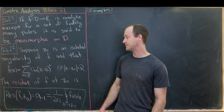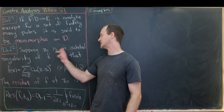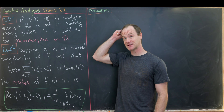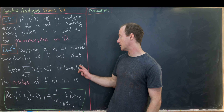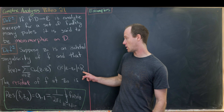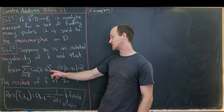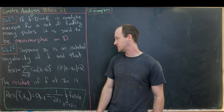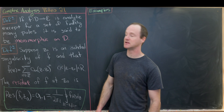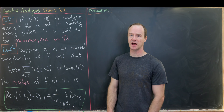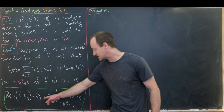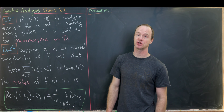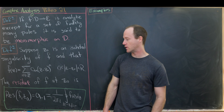The big definition for today is the following. Suppose that z₀ is an isolated singularity of f, and that f(z) expands as a Laurent series in the punctured disk with radius R centered at z₀ as the sum over all integers n of aₙ(z − z₀)ⁿ. Then the residue of f at z₀ is defined as the minus-first coefficient — the coefficient attached to (z − z₀)⁻¹, or to 1/(z − z₀).